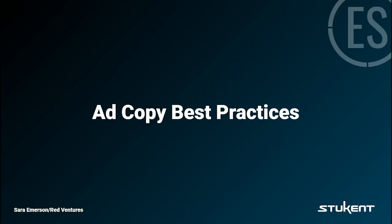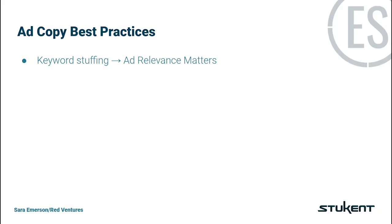Now that you've set goals, let's talk about basic ad copy best practices that will set your foundation for success. The first and possibly most important best practice is to stuff your ad copy with references to the keywords you're targeting. By ensuring that the keyword, and therefore the customer search term, is in your ad copy, you increase your ad relevance. Ad relevance is one of the three primary components of quality score, which makes this a major lever to increase the ad rate.